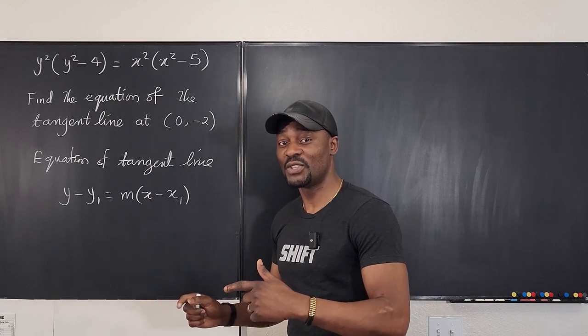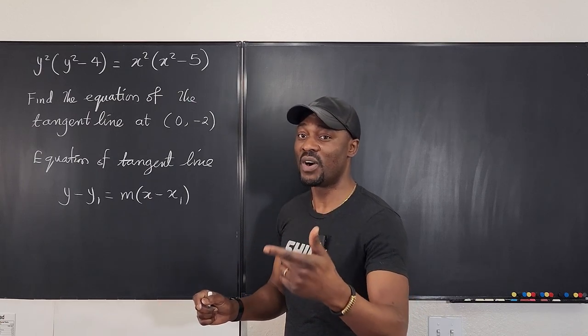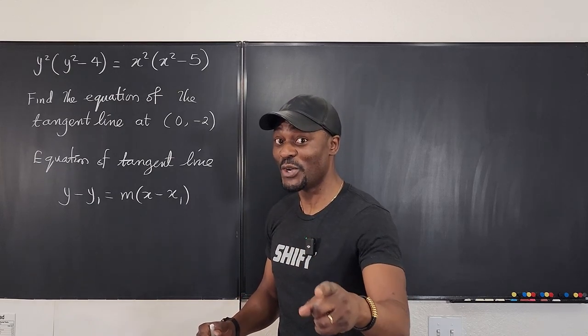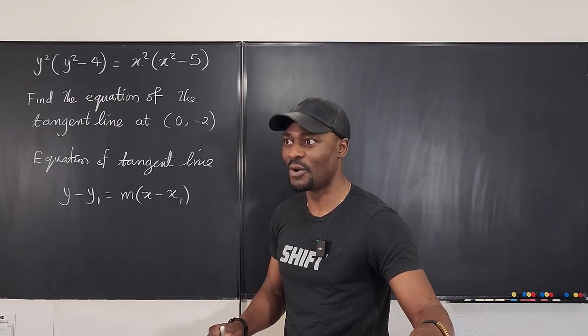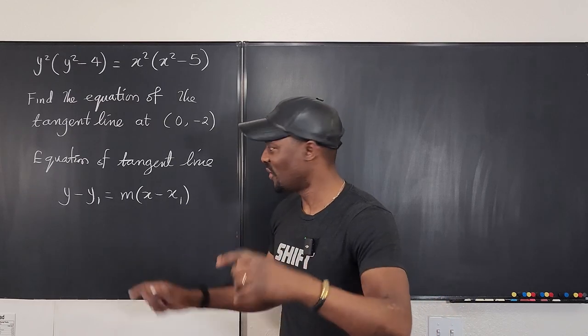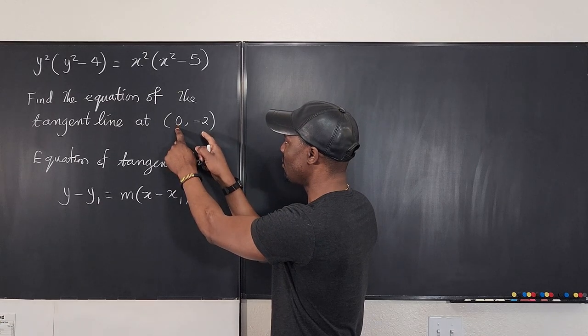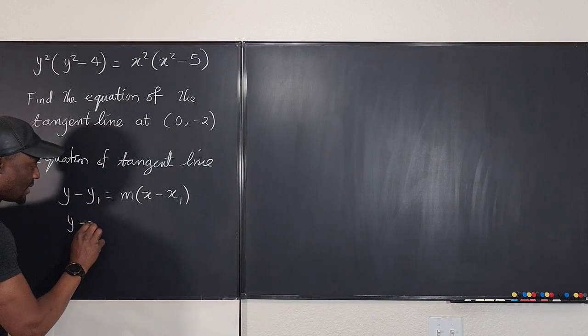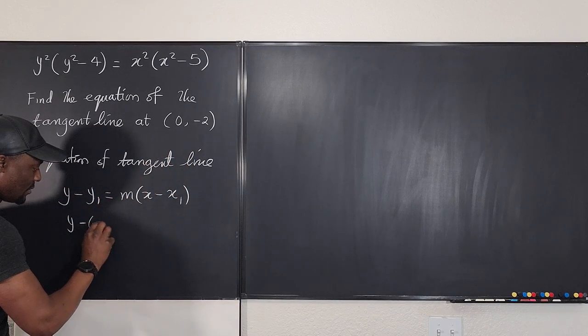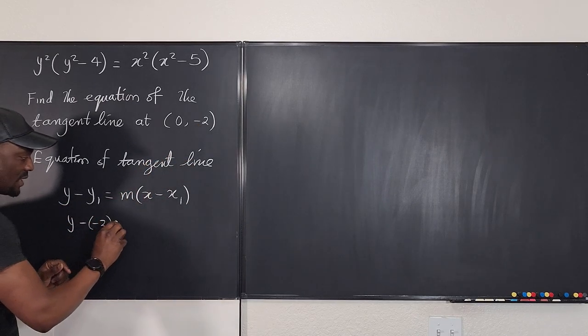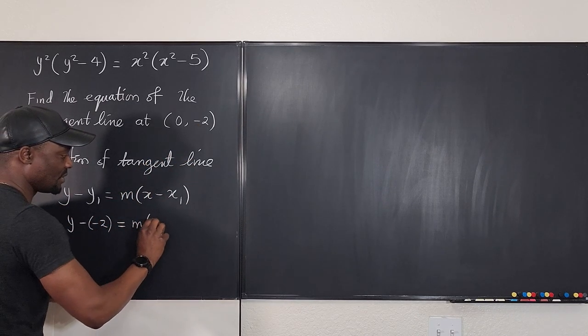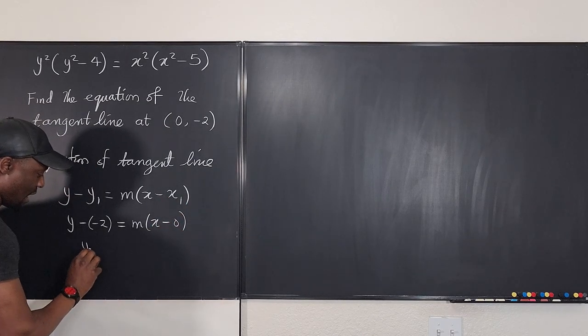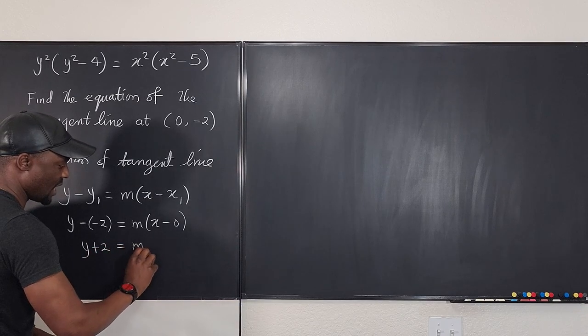So let's use what we have first to find what we want. Let's use what we have to get what we want. Okay so we've got x1 we've got y1 let's go plug them in here. So we have y minus what is y1 it's negative 2 so be careful to take care of the negative 2 correctly equals m times x minus what is x1 it's 0. Okay if we distribute this we've got y plus 2 equals mx.